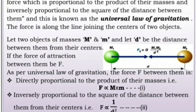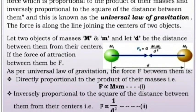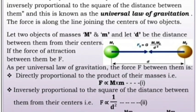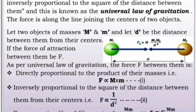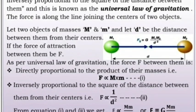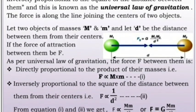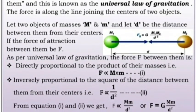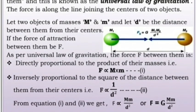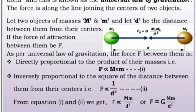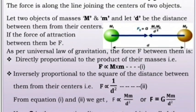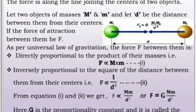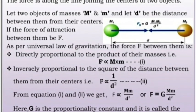Let there be two objects of mass m and M, and let r be the distance between them from their centres. If the force of attraction between them be F, as per the Universal Law of Gravitation, the force F between them is directly proportional to the product of their masses, that is, F is directly proportional to M into m.